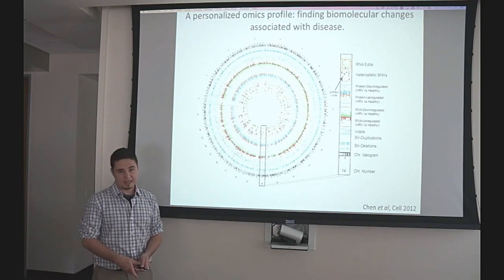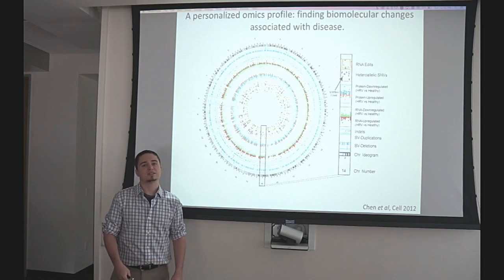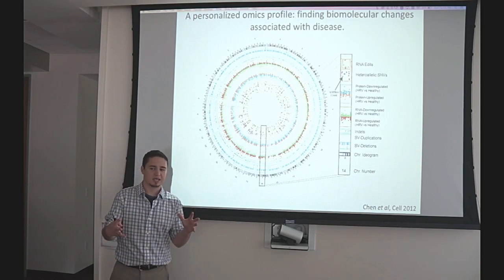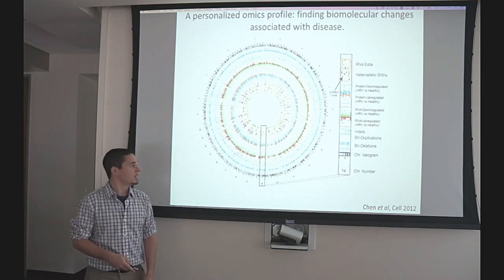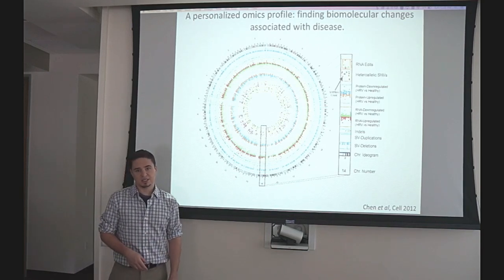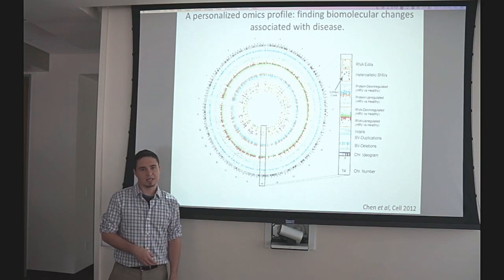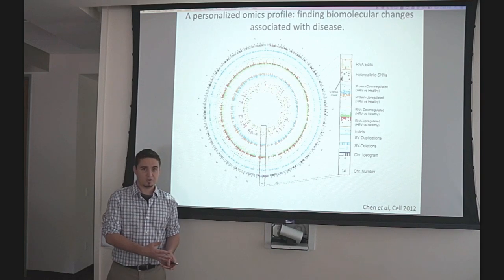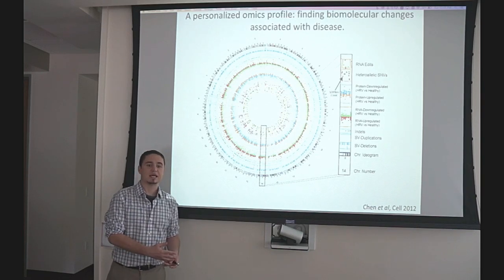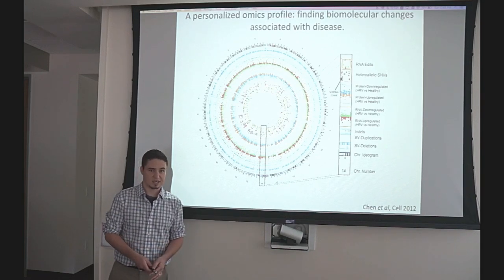When you collect all these data, you can put this together into what we call a personalized omics profile. This identifies genes, proteins, metabolites - everything that is specific to an individual and is hopefully related to that individual's disease.